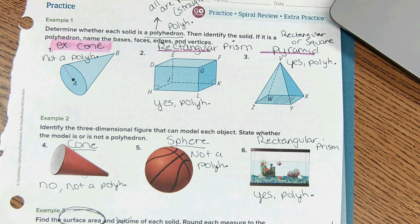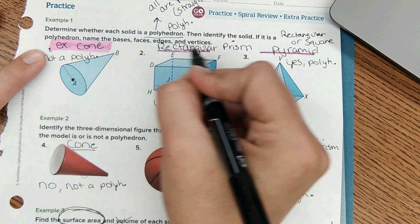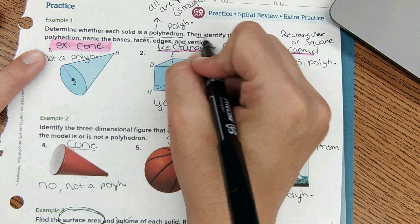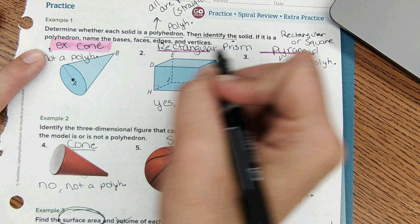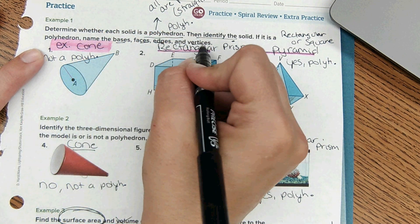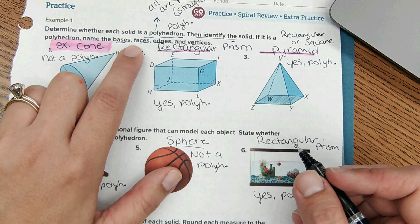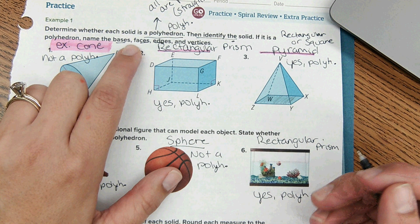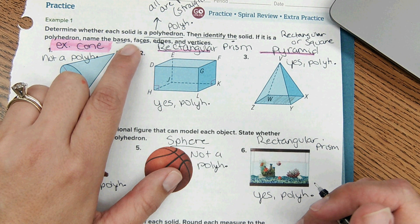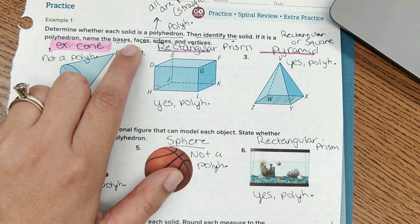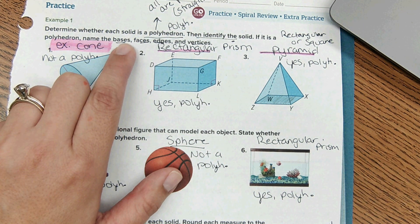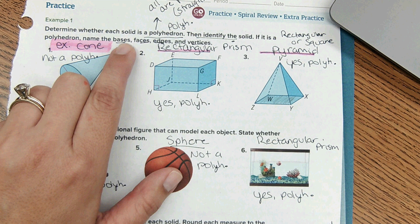Okay, so next it asked to identify the solid - we already named everything so we already did that. If it is a polyhedron, name the bases, faces, edges, and vertices. This right here is on Alex this week if you saw it. This concept also comes up as early as elementary school.